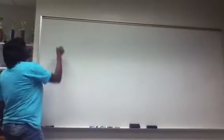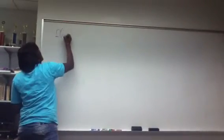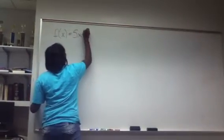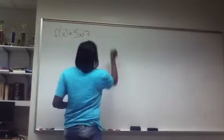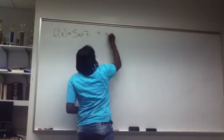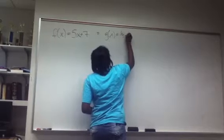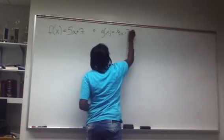Okay, so the equations we're given are f of x equals 5x plus 7, and g of x equals 1/5 x minus 7/5.